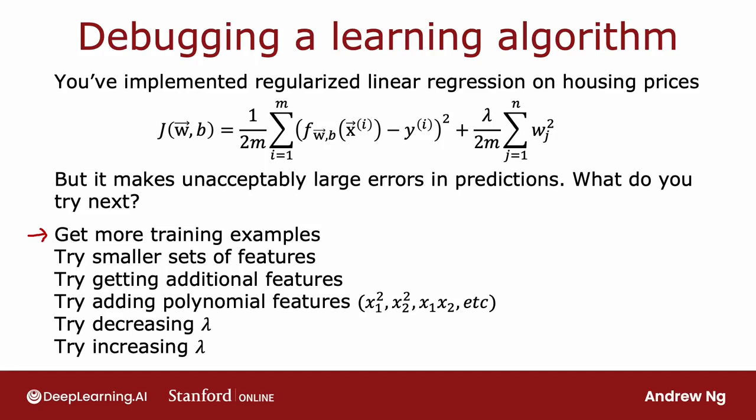But in contrast, if your algorithm had high variance, say it was overfitting to a very small training set, then getting more training examples will help a lot. So this first option of getting more training examples helps to fix a high variance problem.